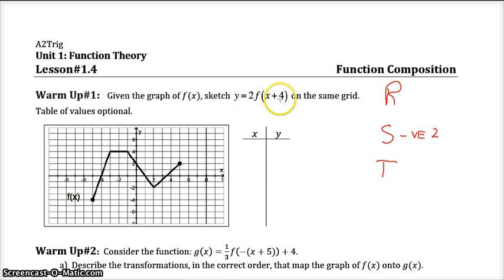And then the 4 inside here is the horizontal kind of x direction translation, but it's going to be left by 4. The table is optional. I'll just kind of do this one at a time. I'm going to vertically stretch each point by 2, and then I'll move it to the left by 4. So I'll vertically stretch this point by 2, and then I'll move it 4 to the left, it goes over there.